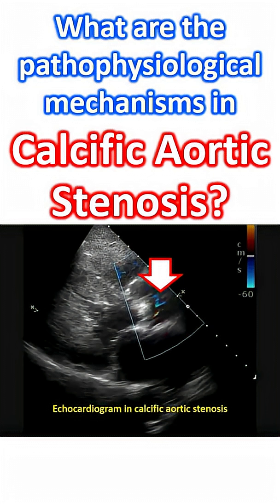Valvular interstitial cells in the aortic valve leaflets can re-differentiate into an osteoblast-like phenotype. This can occur due to reduction in nitric oxide signaling and increase in oxidative stress.